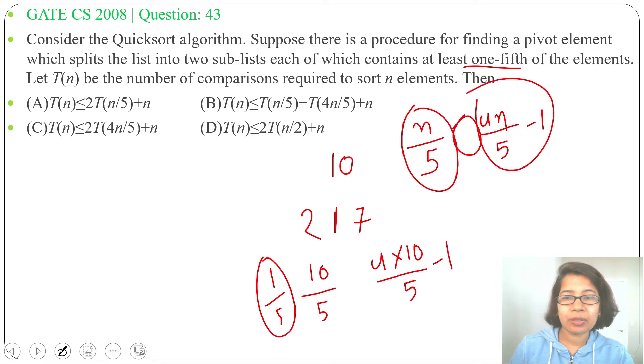So, what will be recurrence relation for this? Recurrence relation will be T(n) equals to T(n/5) for one side and other side, it will be T(4n/5) plus n, n is for partition.